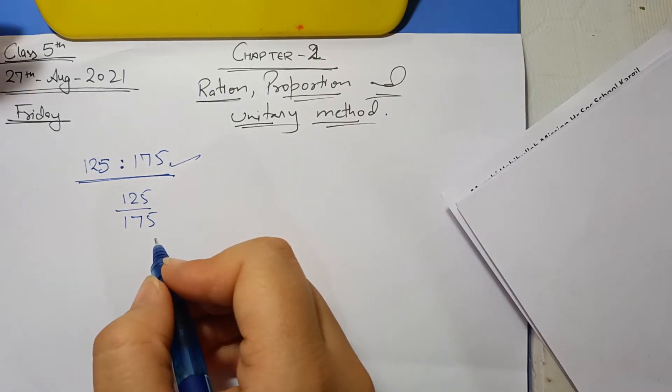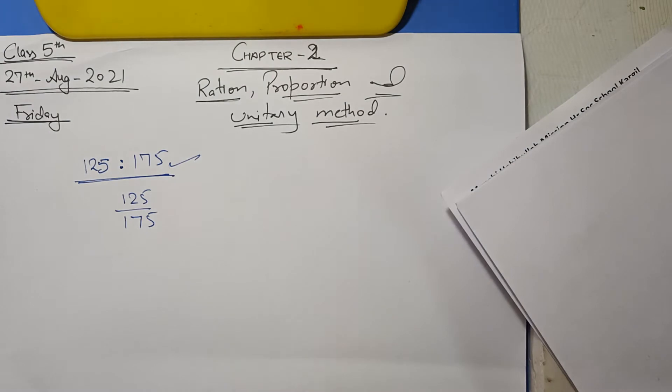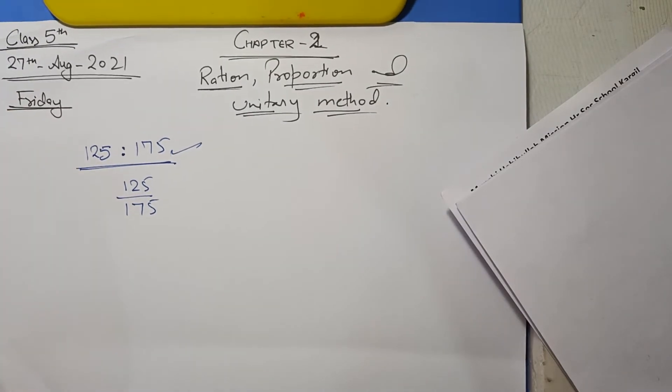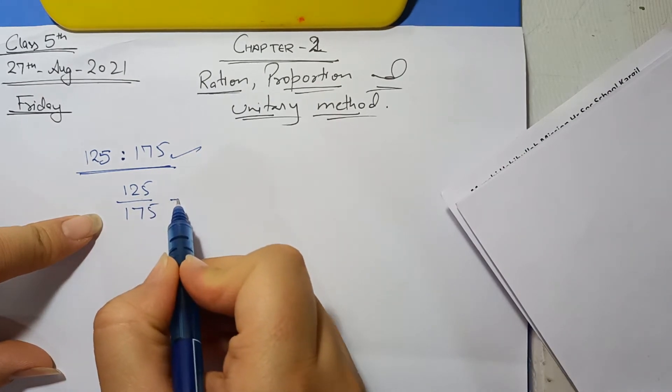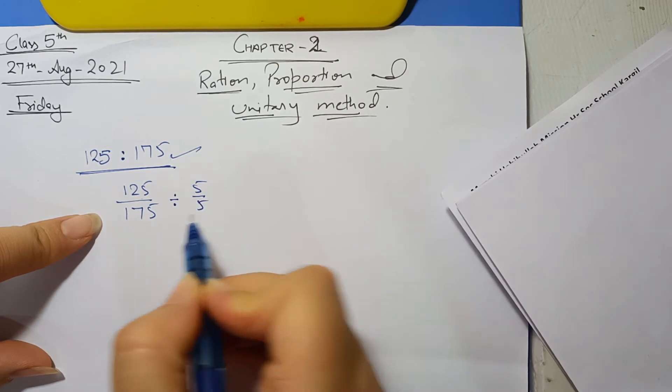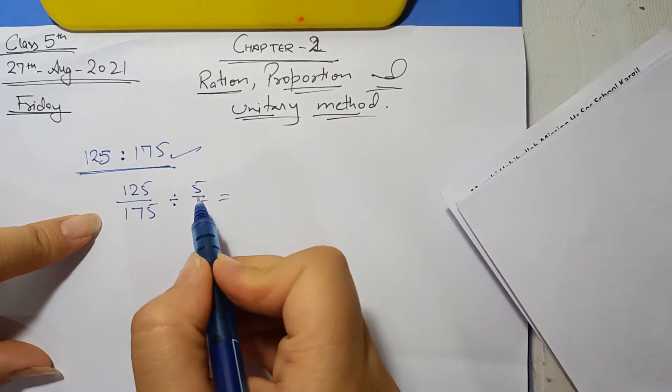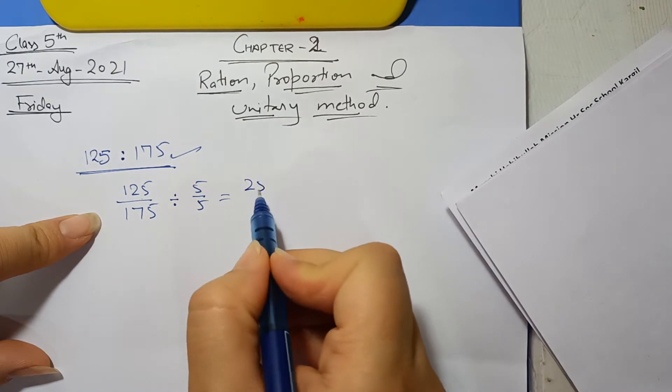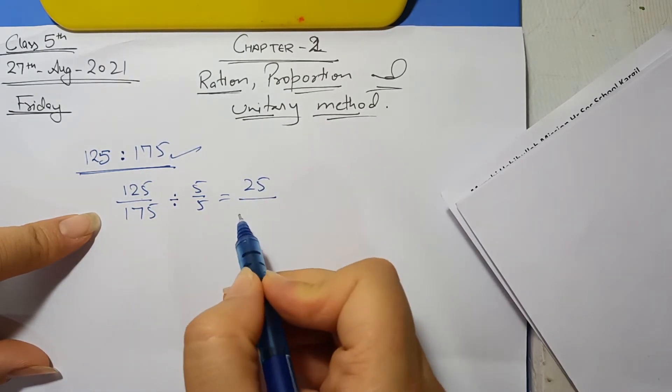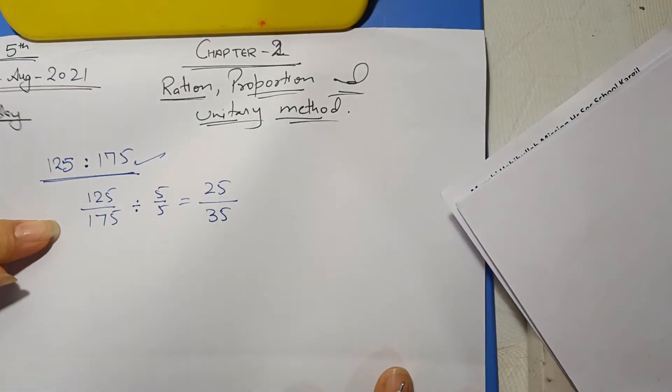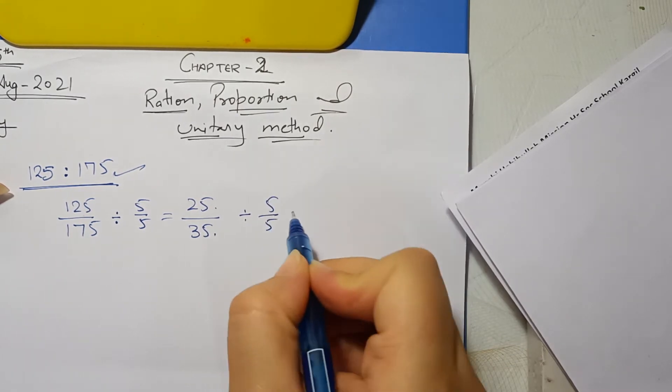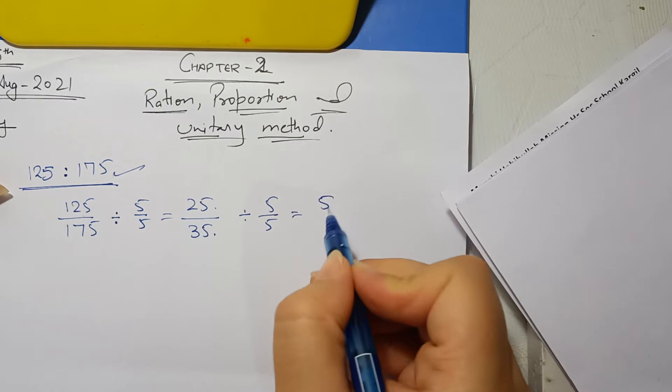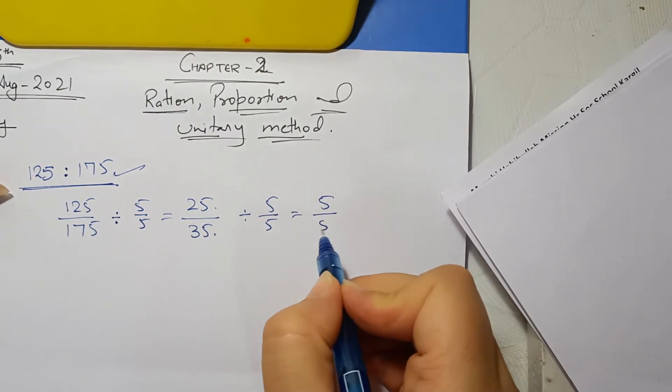What we will do in the simplest form? We will divide them with such numbers so that this is the simplest form. 125 and 175, in both ends it will be divided by 5. Now, we will divide these 25 and 35. So, 25 divided by 5 is 5 and 35 divided by 5 is 7.